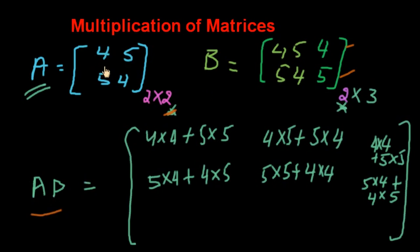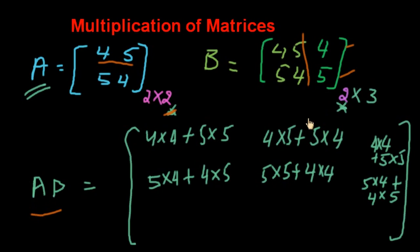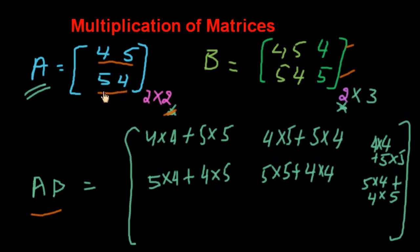Its product AB: first row, first column — four into four plus five into five. First row, second column — four into five plus five into four. Now first row, third column — four into four plus five into five. Now take the second row, first column — five into four plus four into five. Second row, second column — five into five plus four into four.